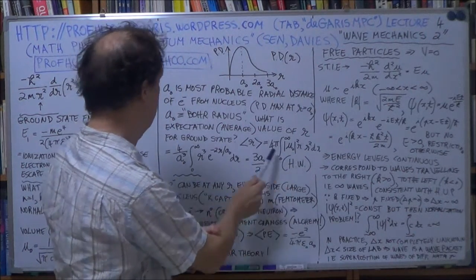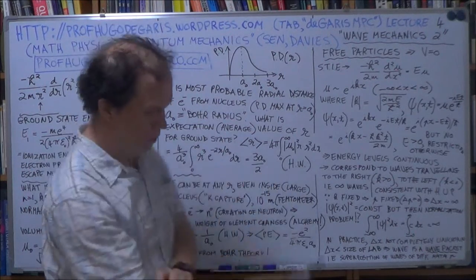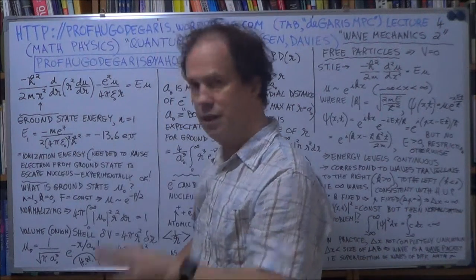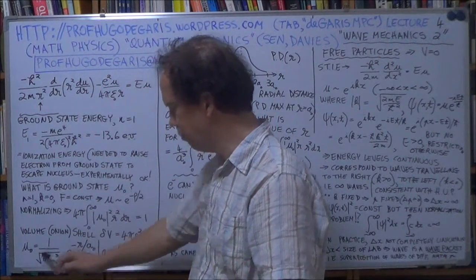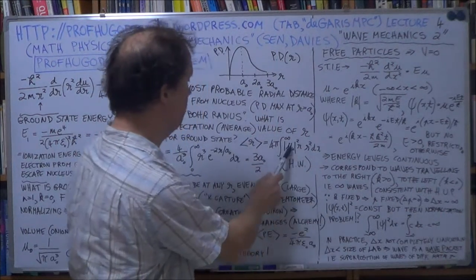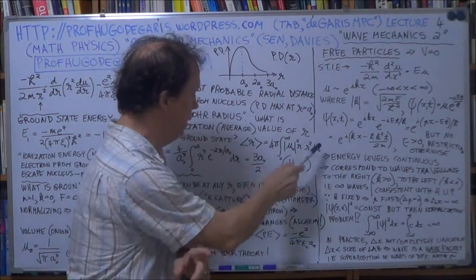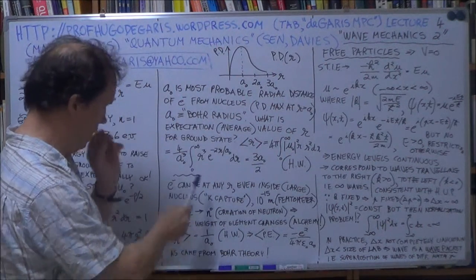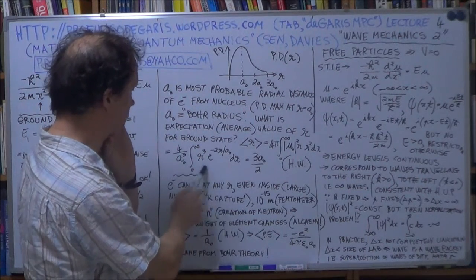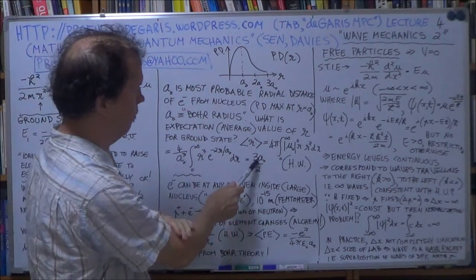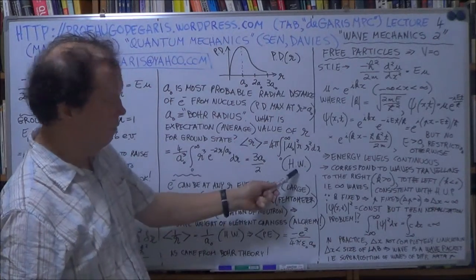So you know u naught, that's the eigenstate, you know the state of lowest energy, and it's here, this term here. So plug it in here, square it, and then calculate this integral, and you'll get, well you're integrating this, and you'll get that result. And again do it for homework.